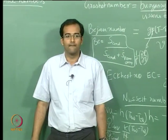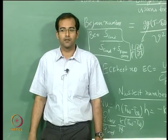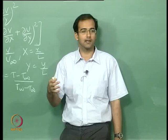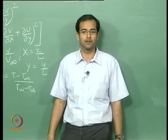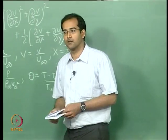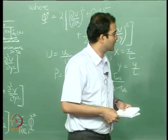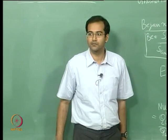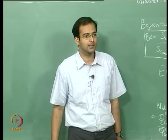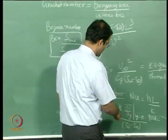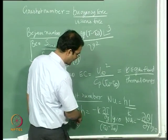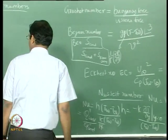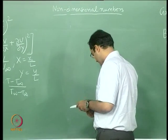The Richardson number groups the Grashof number divided by Re² as a single non-dimensional number. The Nusselt number expression simplifies when K cancels: Nu = HL/K, so K cancels directly. We will now move forward and approximate the Navier-Stokes equations to a simpler set for which analytical solutions can be found — the boundary layer approximation.